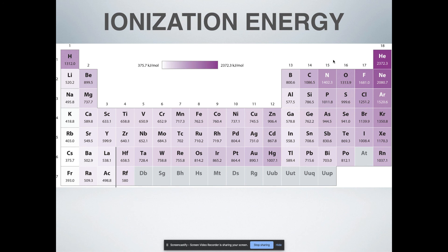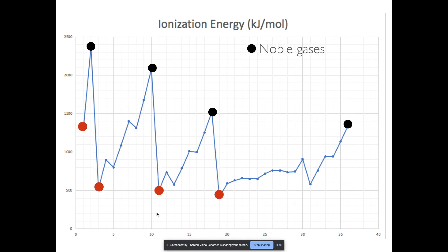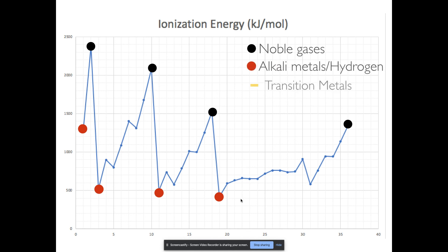This is a chart of first ionization energies. Looking at the patterns, our peaks are our noble gases, and our valleys are the alkali metals and hydrogen. The transition metals form a nice pattern that peaks out at zinc, and then when we go to the next column on the periodic table, it kind of goes back down. Hopefully you found that useful — if you have any questions, let me know.